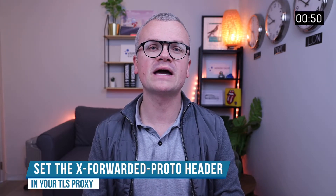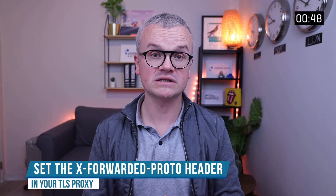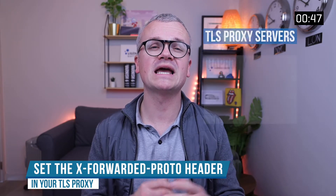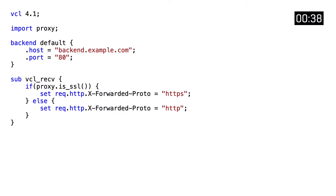It's equally important to set the X-Forwarded-Proto header in your TLS proxy. Whether you're using HTTP proxy, Apache, Nginx, or Hitch, you need to set it. If you're using Hitch, assuming that you connect Hitch to Varnish over the proxy protocol, you can even use VCL for that. You do this by importing the proxy vmod and then using the proxy isSSL function to check whether or not SSL was used, and set the value of X-Forwarded-Proto accordingly.